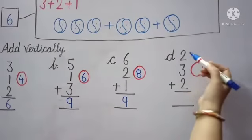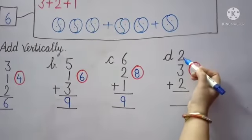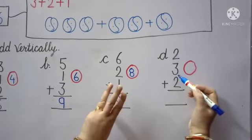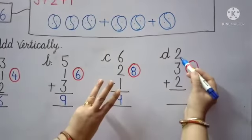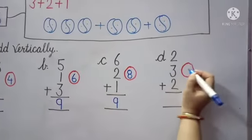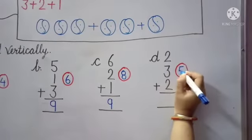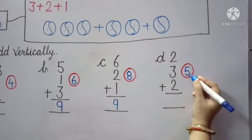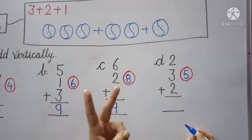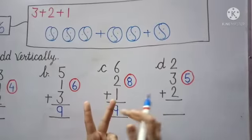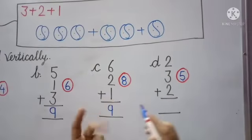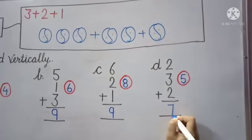Next. First number is 2 — keep 2 in the mind. Next number is 3, raise 3 fingers. What comes after 2? 3, 4, 5. So here we write number 5. Keep 5 in the mind. Next number is 2, raise 2 fingers. What comes after 5? Count with me: 6, 7. So here we write number 7.